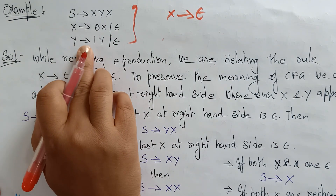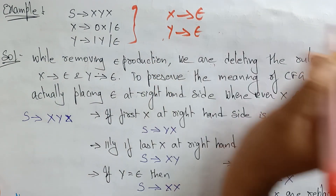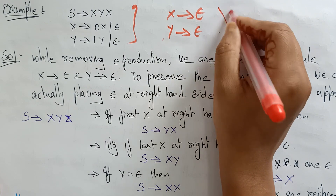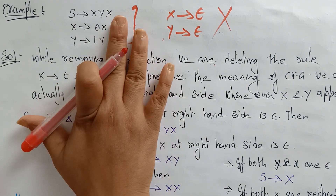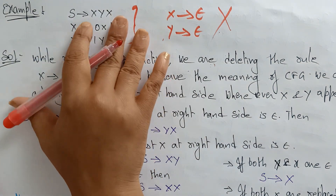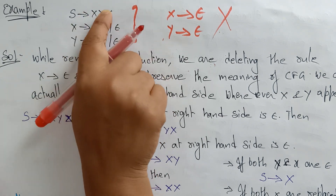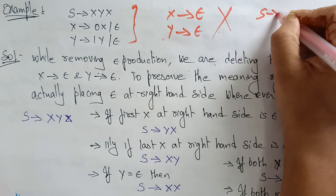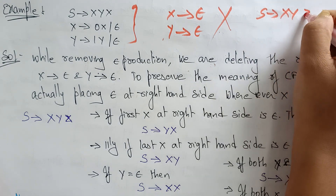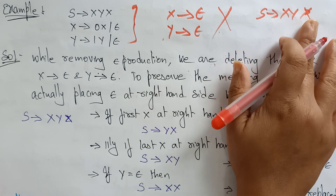Also, Y determines 1Y or Y determines Epsilon. So I want to remove these two epsilon productions. But you can't simply remove these productions, because if you do, you can't reach the required string. Our condition is that whatever non-terminals are present on the right-hand side should eventually be replaced with terminals.